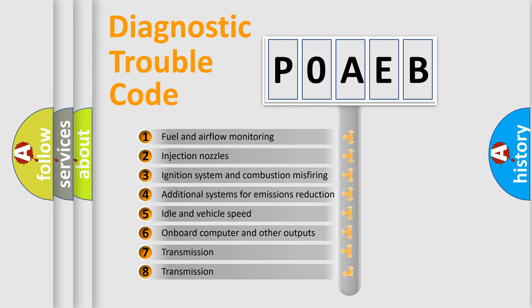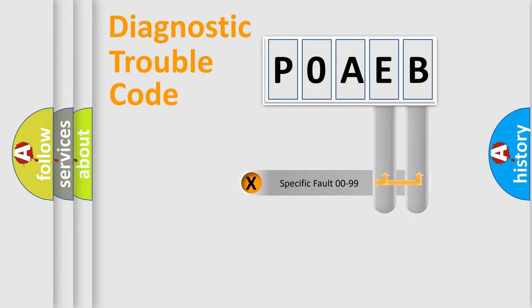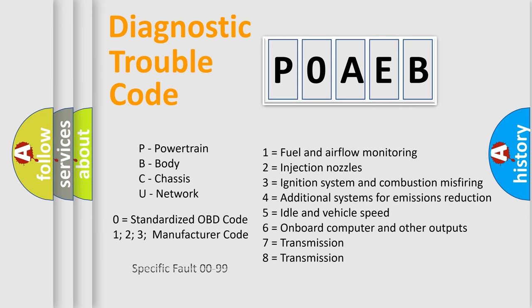The distribution shown is valid only for the standardized DTC code. Only the last two characters define the specific fault of the group. Let's not forget that such a division is valid only if the other character code is expressed by the number zero.